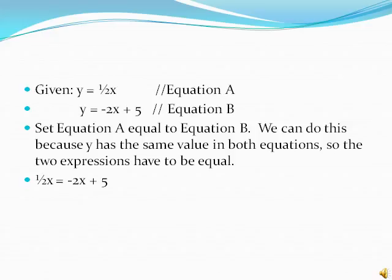We can set one half x equal to negative 2x plus 5 because both of them equal y. So y in this system has the same value. That's where we get the substitution - we just set one half x equal to negative 2x plus 5.